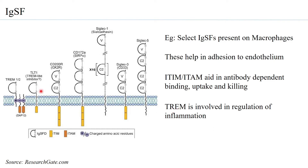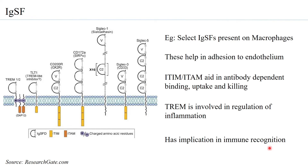TREM is also an IGSF and is involved in regulation of inflammation, showing that IGSFs have a regulatory function as well. All of this has implications in immune recognition — they are able to recognize molecular patterns present on surfaces of other cells, contributing to immune surveillance.